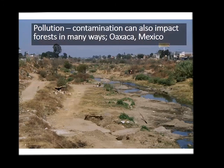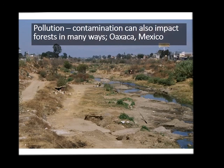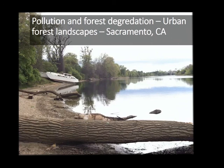Pollution and contamination are another impact of people on forests. This is the main drainage through the city of Oaxaca — most of the riparian trees have been cleared, and there's a lot of contamination, garbage and stuff, which has an impact on the forests. You don't actually have to go to the developing world to see that kind of thing — you can see it much closer to home. This is on the American River in Sacramento, and that boat you see there is just a little hot spot of hazardous waste that's been dumped on the side of the river. Those kinds of things impact and can degrade forests as well.